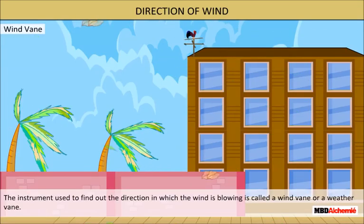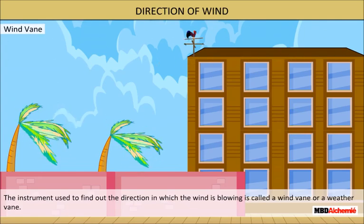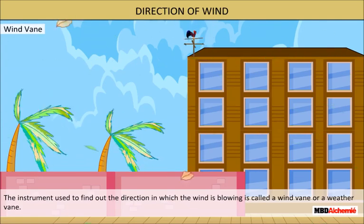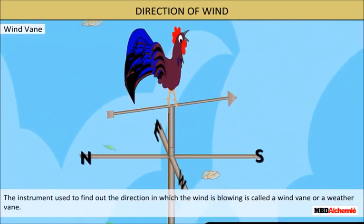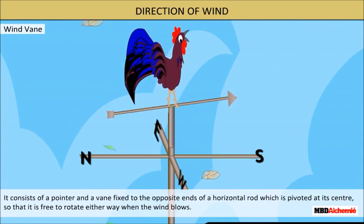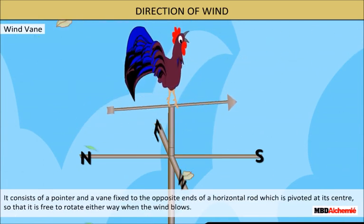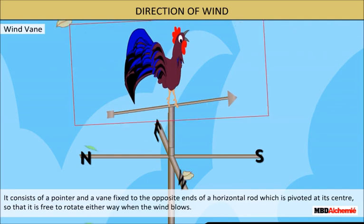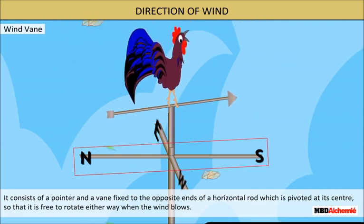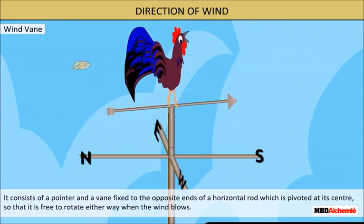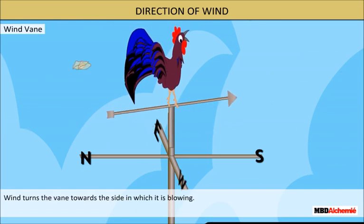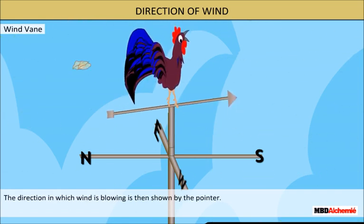The instrument used to find out the direction in which the wind is blowing is called a wind vane or weather vane. It consists of a pointer and a vane fixed to the opposite ends of a horizontal rod, which is pivoted at its center so that it is free to rotate either way when the wind blows. Wind turns the vane towards the side from which it is blowing, and the direction is then given by the pointer.